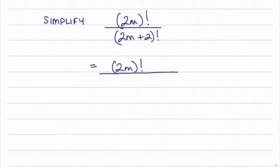And in the denominator I'm going to rewrite that as 2m plus 2 multiplied by 2m plus 1, and that's multiplied by 2m factorial.